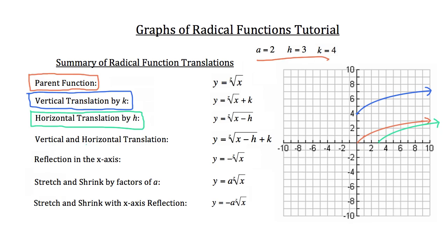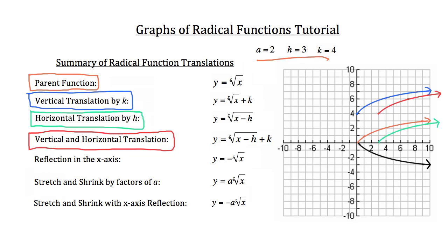Now let's look at a combined vertical and horizontal translation by h and k — shown in red. This looks exactly as it did in the previous graphing problem because h and k are the same. Now let me show you what happens when we reflect this radical function in the x-axis. You'll see we've taken the original parent function and reflected it down onto the underside of the x-axis — all that work done in black.